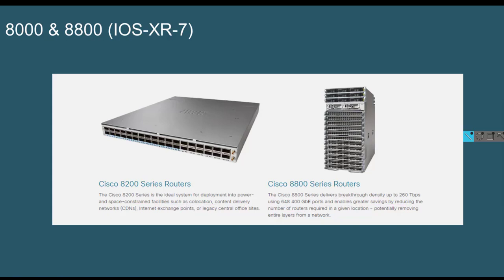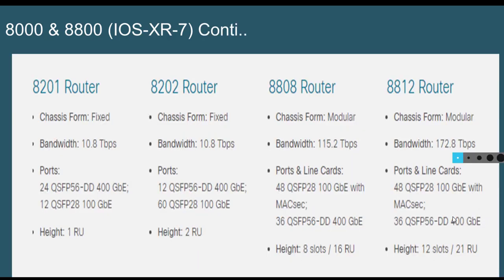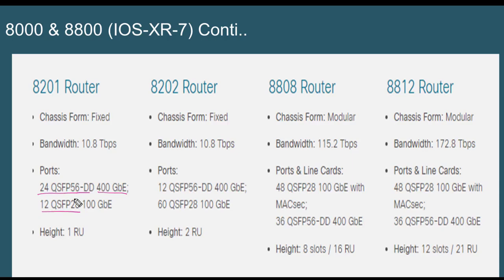Let's look at more details about the various models within the 8000 and 8800 series. First, the supported module types: the QSFP56 is a double-density optical transceiver supporting up to 400 GigE applications, and the QSFP28 supports up to 100 GigE, integrating four transmit and four receive channels, with each lane carrying up to 28 Gbps of data.